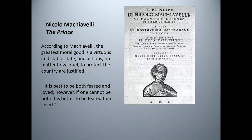Italian diplomat Niccolò Machiavelli wrote the influential The Prince in 1513. According to Machiavelli, the greatest moral good is a virtuous and stable state, and actions — no matter how cruel — to protect the country are justified. It is vital that a ruler do anything necessary to keep his power. However, Machiavelli strongly suggests that above all, the prince must not be hated. He states: 'A wise prince should establish himself on that which is in his own control and not in that of others; he must endeavor to avoid hatred.' He also says it is best to be both feared and loved; however, if one cannot be both, it is better to be feared than loved. Machiavellian philosophy continues to be influential in world politics and philosophy today.